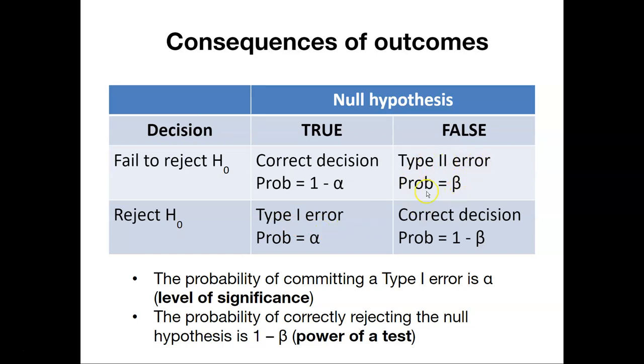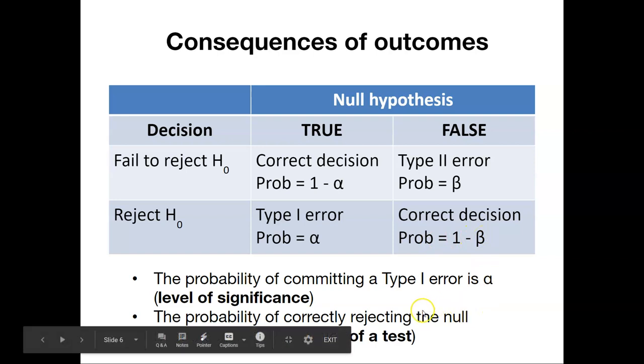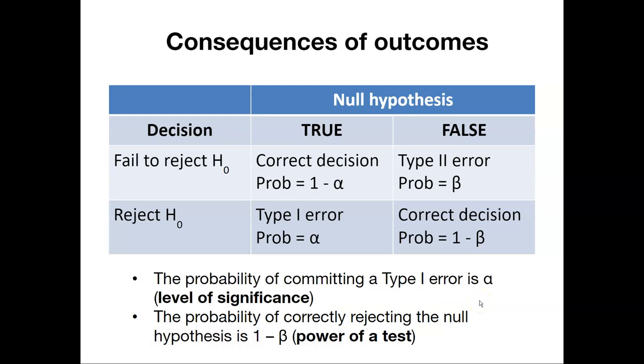On the other hand, we have a different kind of error, what we call type two error. So this is when our null hypothesis is false, but we fail to reject the null hypothesis in our statistical test. We denote that as beta. What we want is having the correct decision. That is to say, we want to reject the null hypothesis in our statistical test when in actuality it's false. And that's what we call one minus beta, or what we also call the power of a test. The power of a test is the probability of correctly rejecting the null hypothesis.